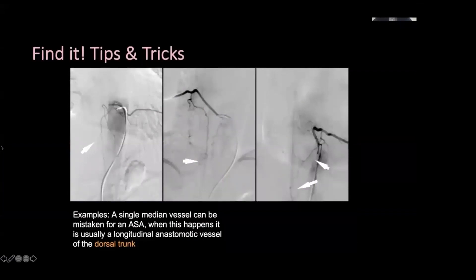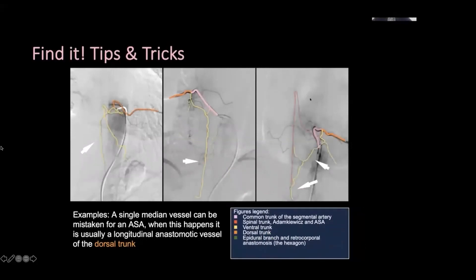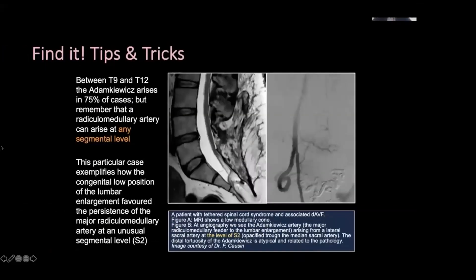This is an example of getting faked out thinking you're seeing the Adamkiewicz when you're not, and different ways you can figure out what you're actually looking at. This is an example of a dural AVF, and a reminder to angiographers to look at all levels of the spine in order to find feeders for shunts such as dural arteriovenous fistulae.